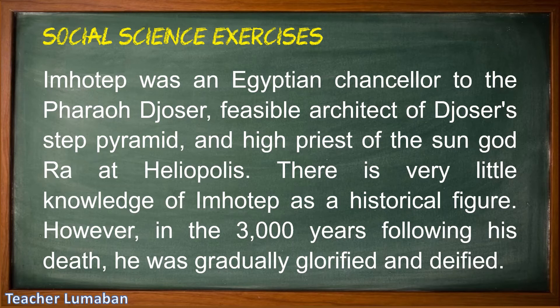Imhotep was an Egyptian chancellor to the Pharaoh Djoser, the architect of Djoser's Step Pyramid, and high priest of the sun god Ra at Heliopolis. There is very little knowledge of Imhotep as a historical figure; however, in the 3,000 years following his death, he was gradually glorified and deified.